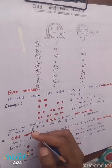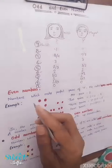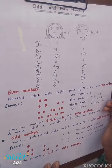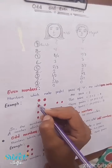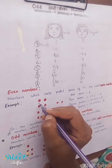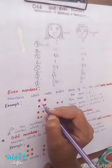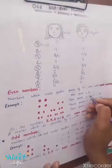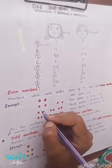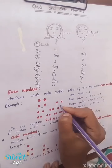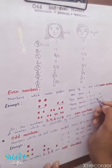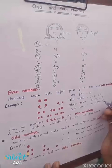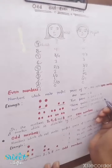Even numbers are numbers which make a perfect pair of two. For example, two makes one perfect pair. Four makes two pairs — two plus two equals four. Six makes three pairs — two plus two plus two equals six. Eight makes four pairs — it can make perfect pairs of two, so it is an even number.